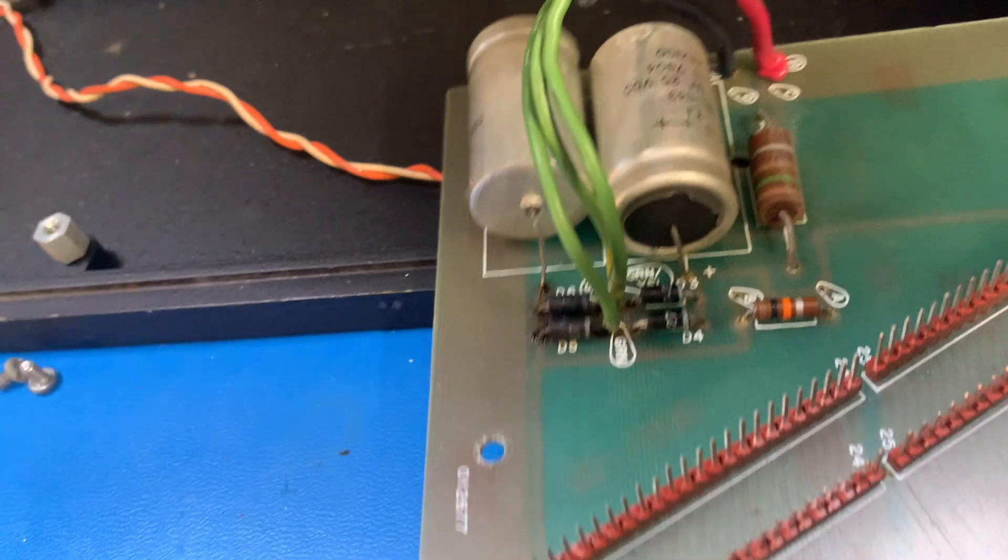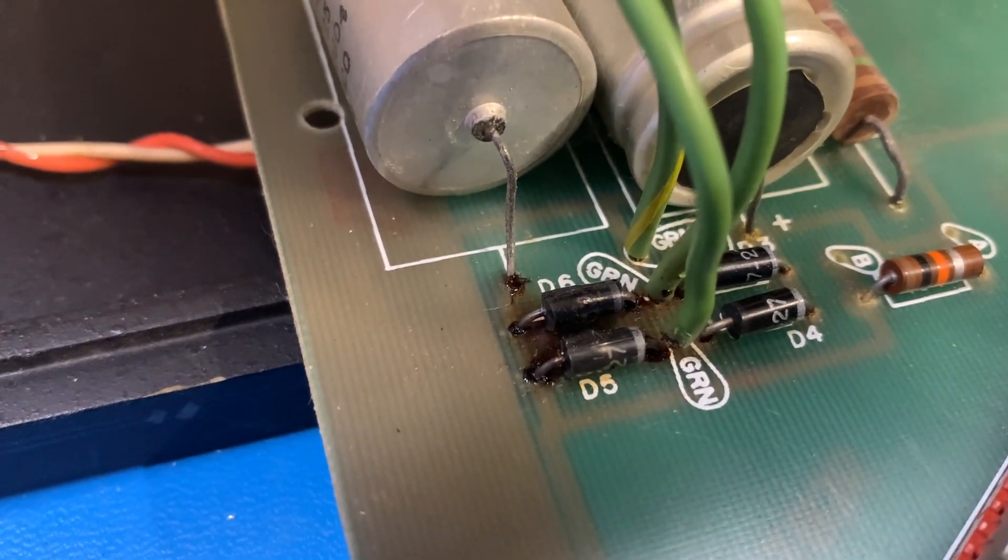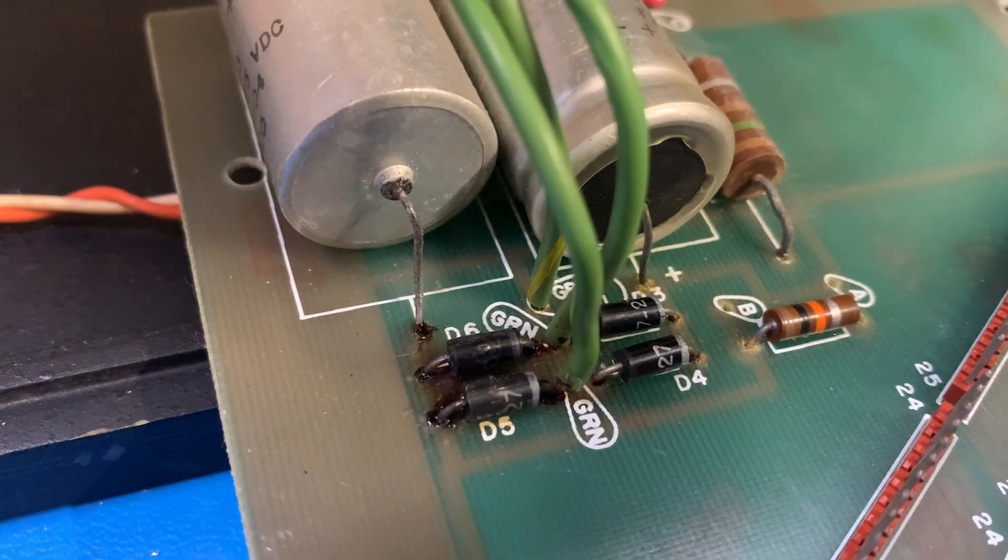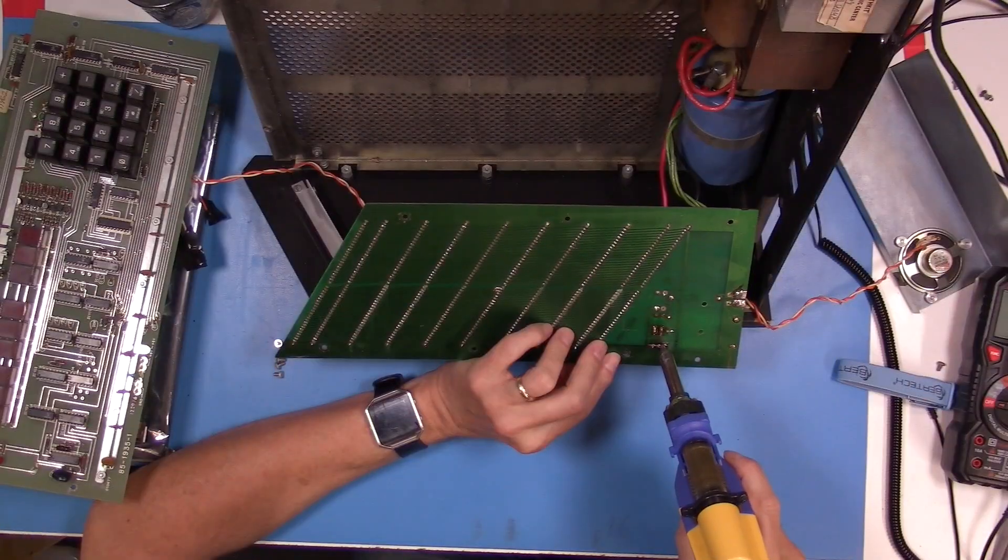And taking a closer examination there of the rectifier diodes, I can see two of them look pretty swollen and dark. And so I'm pretty certain that those are going to be bad. And that's going to be my first part replacement on this system.